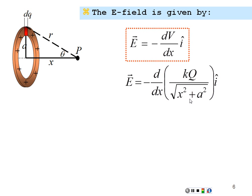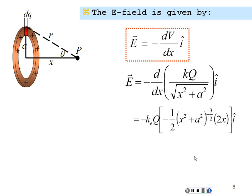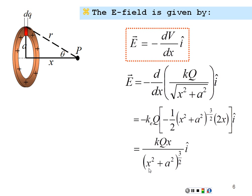This is 1 over x squared plus a squared to the one-half power, which is x squared plus a squared to the negative one-half. Decrementing that power gives negative three-halves, and the negative one-half comes out front. By the chain rule we take the derivative of what's inside, giving an additional 2x. The negatives cancel out and the one-half times 2 cancels, leaving us with k q x over x squared plus a squared to the three-halves power, times the unit vector i from the gradient.